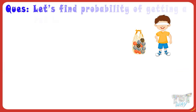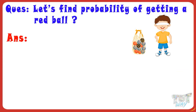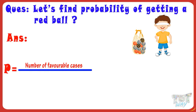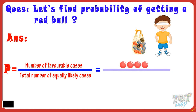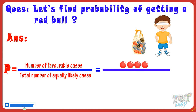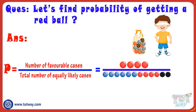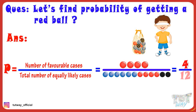Now, let's find the probability of getting a red ball. We know the formula is number of favorable cases divided by total number of equally likely cases. Number of favorable cases — that is, the cases we want — are four, as four red balls are there. And total number of equally likely cases are 12, as 12 balls are there. So, probability of getting a red ball equals four by 12, or one by three.